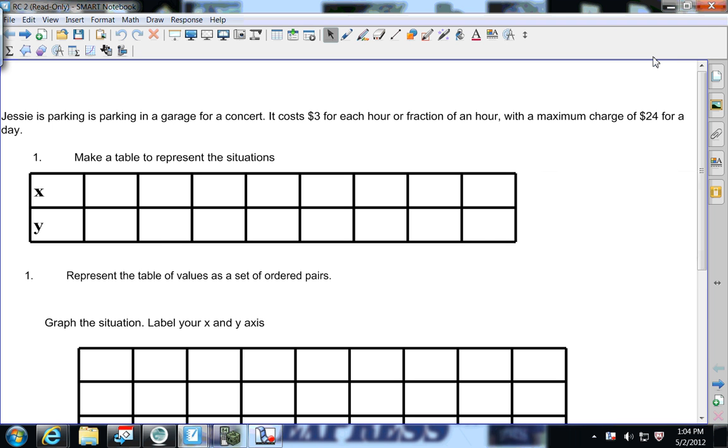Okay, we're going to take a closer look at domain and range and talk about applying it into a problem. This problem says Jessie is parking her car in a garage for a concert, and it says that it costs $3 for each hour or each fraction of an hour, meaning that if you're in there for an hour and a half they're going to round it up to two.